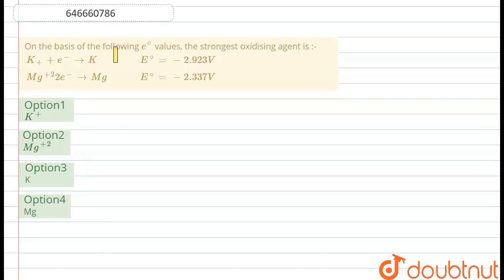Hello everyone, let's start the given question. The question says that on the basis of the following E⁰ values, the strongest oxidizing agent is. So we have to find out—we have been given two reactions and their E⁰ values have been given to us.